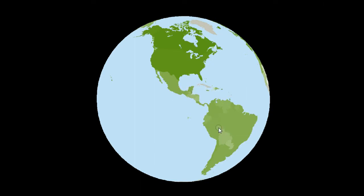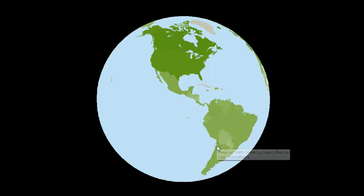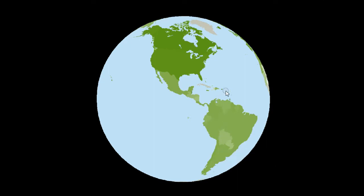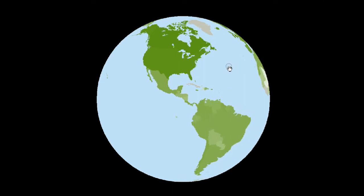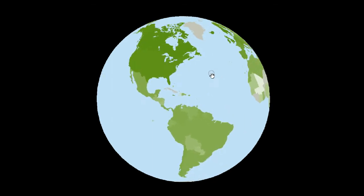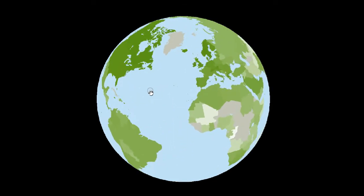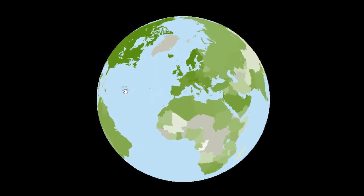Going down into South America, Brazil is 0.038 per 1,000, and Chile is a little bit higher at 0.062 views per 1,000. This views per 1,000 metric allows you to compare large and small countries and see which country has the most views per 1,000 residents. Let's go around and take a look at Europe.